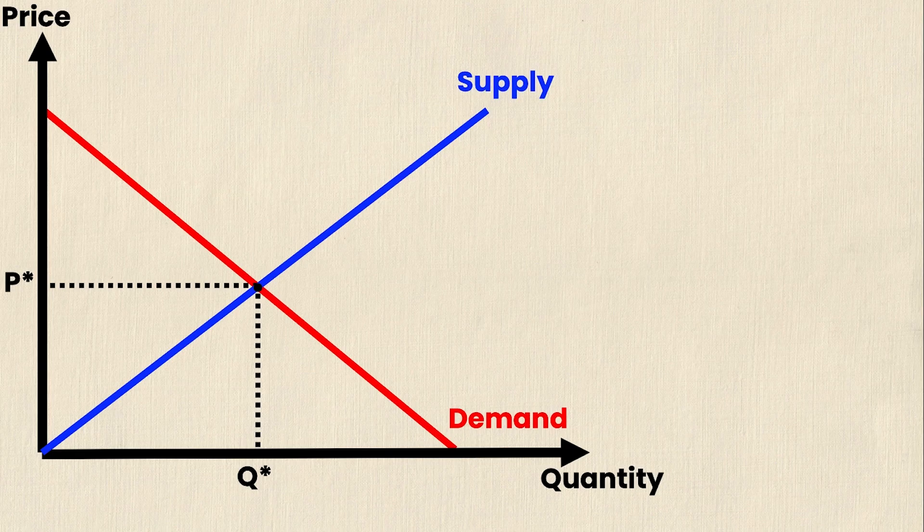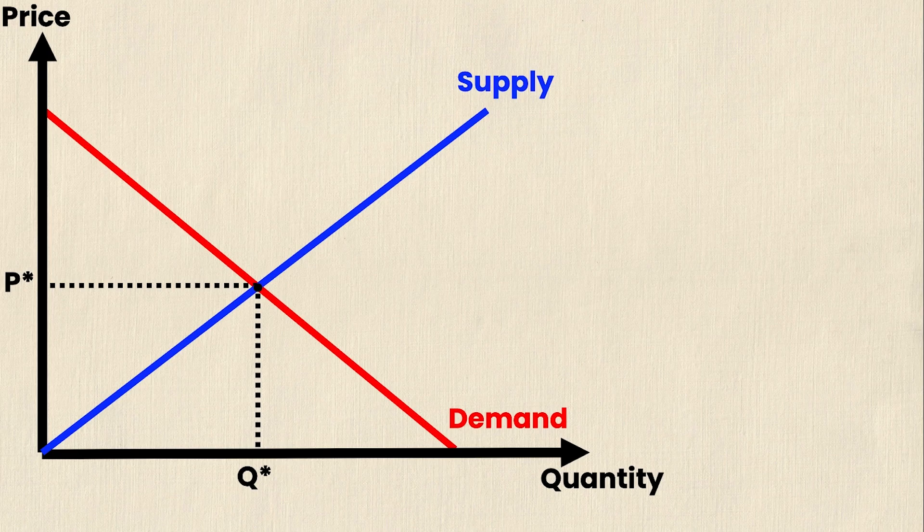Once again, price is on the vertical axis, quantity is on the horizontal axis. P star and Q star denote my intersection of my supply curve which is upward sloping and it's in blue, and my downward sloping demand curve which is in red.